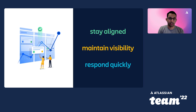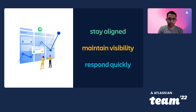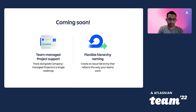And that's how you can use Advanced Roadmaps. With its powerful features, you'll be able to plan, track, and report off a single source of truth, keep teams aligned on shared goals, maintain visibility of work in progress, and respond quickly to changes while keeping dependencies and capacity in mind. Advanced Roadmaps is one of our most popular features in Jira, and we're constantly improving it to make it more useful for our customers.